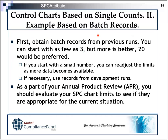For batch records, you can start with as few as three previous batch records, but more is better — 20 is preferred. If you start with a small number, you can plan to readjust parameters at 5, then 10, then 15, and then 20 batch records. As you progress with product development, you will have more lots to set your SPC parameters — mainly the average and the range. As part of your annual product review, you should evaluate the SPC chart limits to see if they are appropriate or if they were set based on wrong assumptions.